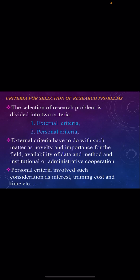Next, the criteria for selection of research problems. The selection of research problems is divided into two criteria: external criteria and personal criteria. External criteria includes aspects such as novelty, importance for the field, availability of data, method, and administrative cooperation.